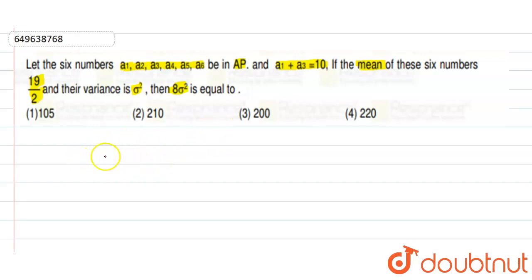This means the sum divided by 6. So S6 divided by 6 is equal to 19 divided by 2. It means that S6 is equal to 57.